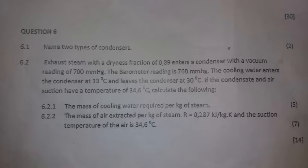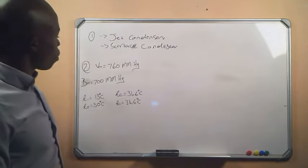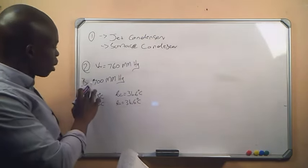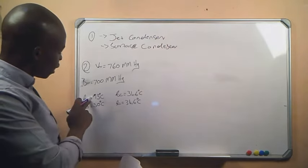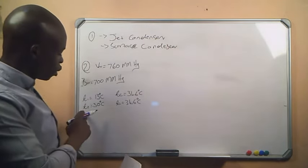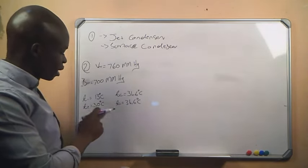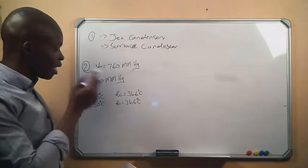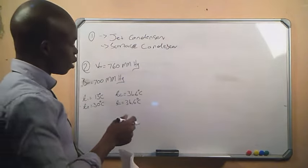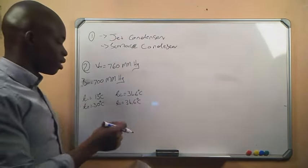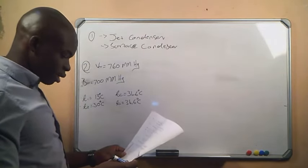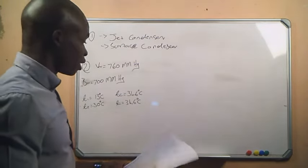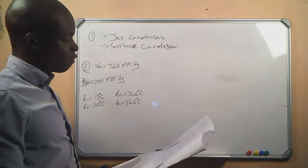To summarize our given data: vacuum reading VR = 700 mmHg, barometer reading BR = 760 mmHg, cooling water inlet temperature t1 = 13°C, cooling water outlet temperature t2 = 30°C, condensate temperature tc = 34.6°C, and the air suction temperature is also 34.6°C.